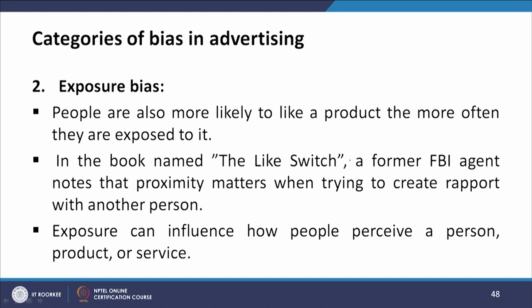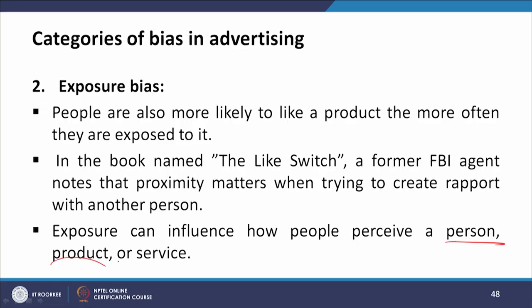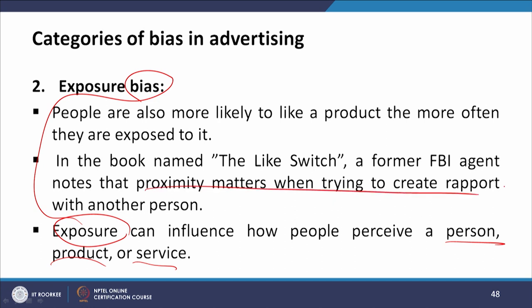The second type of cognitive bias is exposure bias. People are more likely to like a product the more often they are exposed to it. In the book The Like Switch, a former FBI agent notes that proximity matters when trying to create rapport with another person. Exposures can influence how people perceive a person, product, or service.